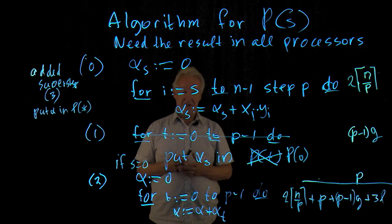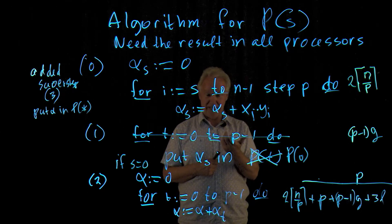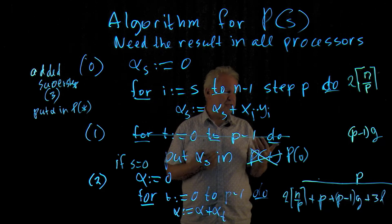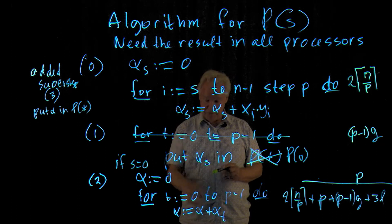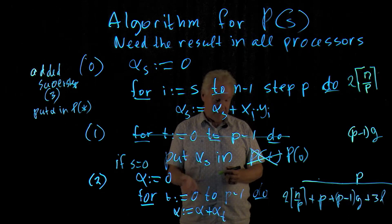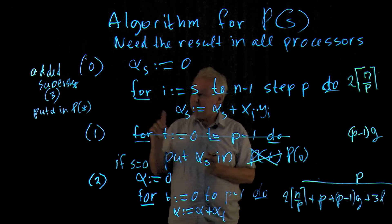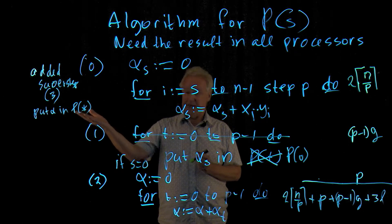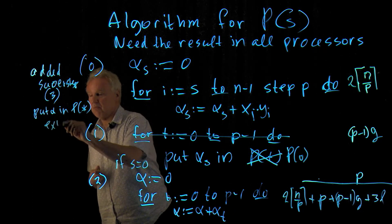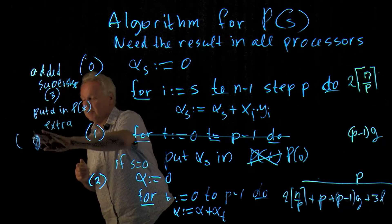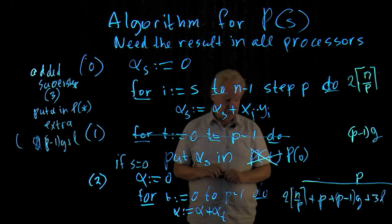And what changes in the cost? First of all, super step one still has the same cost because processor zero receives p minus one elements. And that's the maximum then. The others don't receive anything, but that doesn't help us. This is still the cost. The cost of this super step two also remains the same because in the time that processor zero adds the results, the others are idling. They are doing nothing. And the extra super step gives, well, it's basically the reverse of what we had before. You're sending alpha back to everybody, and that's an extra p minus one, g plus l. So, only sending it to p zero is not such a good idea.